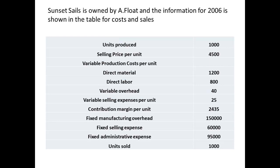Consider the sales and cost information for Sunset Sales. The number of units produced and sold are shown, the selling price is shown, and the variable and fixed costs are shown. In our example, we are going to start by considering what happens when the number of units produced is equal to the number of units sold. You may already have guessed that the income statements produced by each method should be the same, since there will be no inventory left at the end of the year. Nevertheless, let us see how this is calculated.